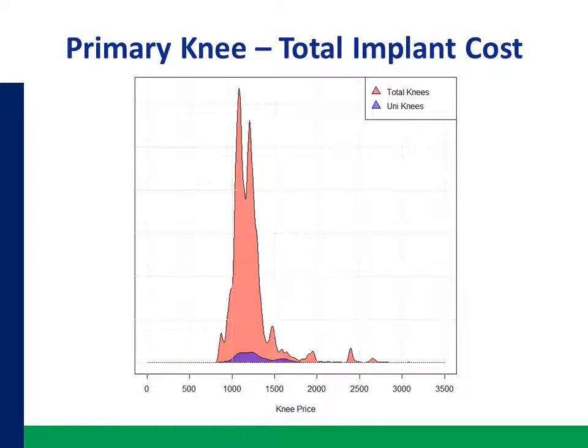The same applies for primary knees, showing both total knees and unicondylar knees.